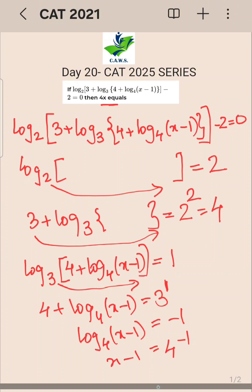The x ka value kya hajaega, x ka value hajaega 1 by 4 plus 1, because 4 raised to minus 1 is 1 by 4, so that gives you 5 by 4.